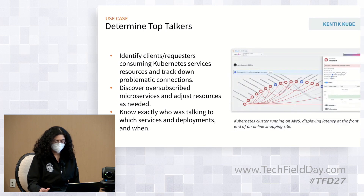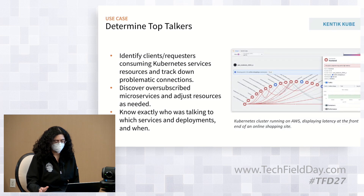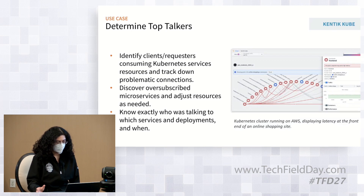Another use case using Kentik Cube is to determine top talkers from the internet — to identify clients and requesters that are consuming Kubernetes resources and track down problematic connections, or customers from the internet that may not have authorization to access the resources they're accessing, or may be contributing an unexpected amount of traffic and oversubscribing to certain microservices. The user can then take action, adjust policies, figure out what's going on, and adjust resources as needed.